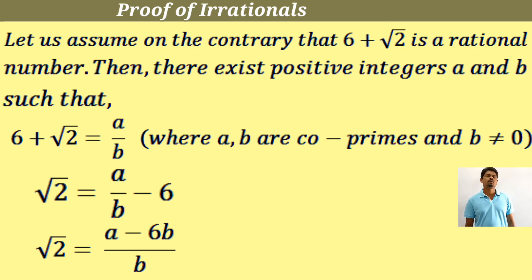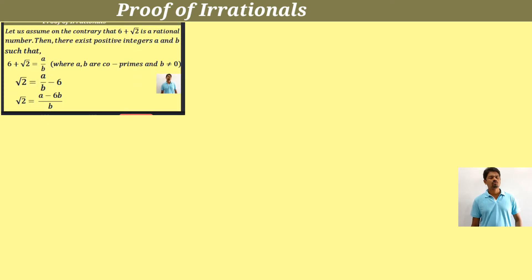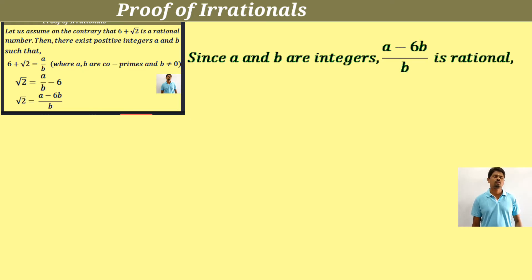Here it is very clear: a and b are integers, a minus 6b is also an integer, b is also an integer which is not equal to 0. Here a minus 6b divided by b is a rational number, but it is equal to root 2. This says that root 2 is rational, since a and b are integers, a minus 6b by b is rational, and root 2 is also rational.